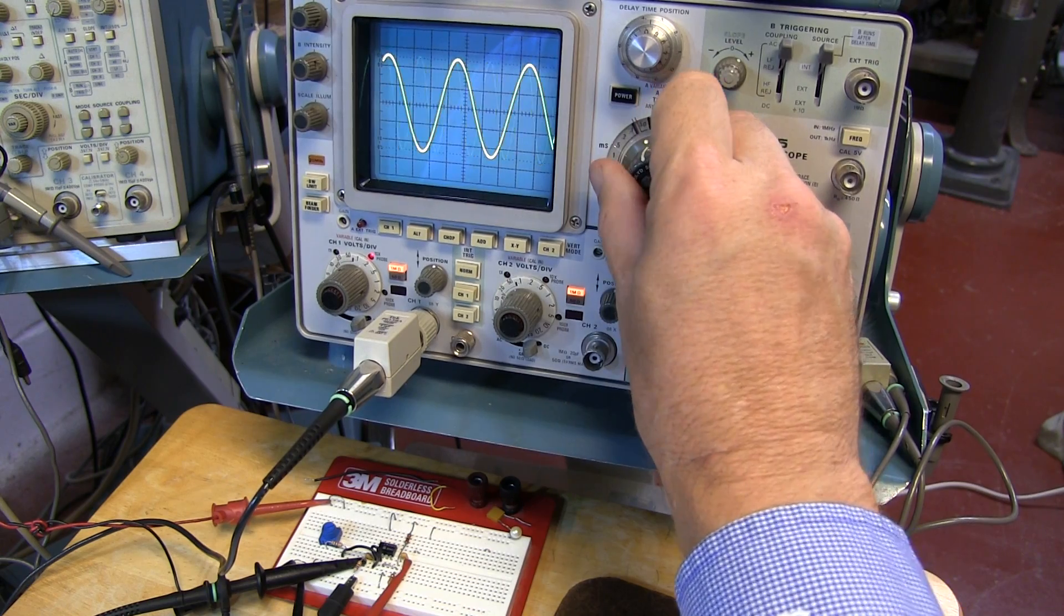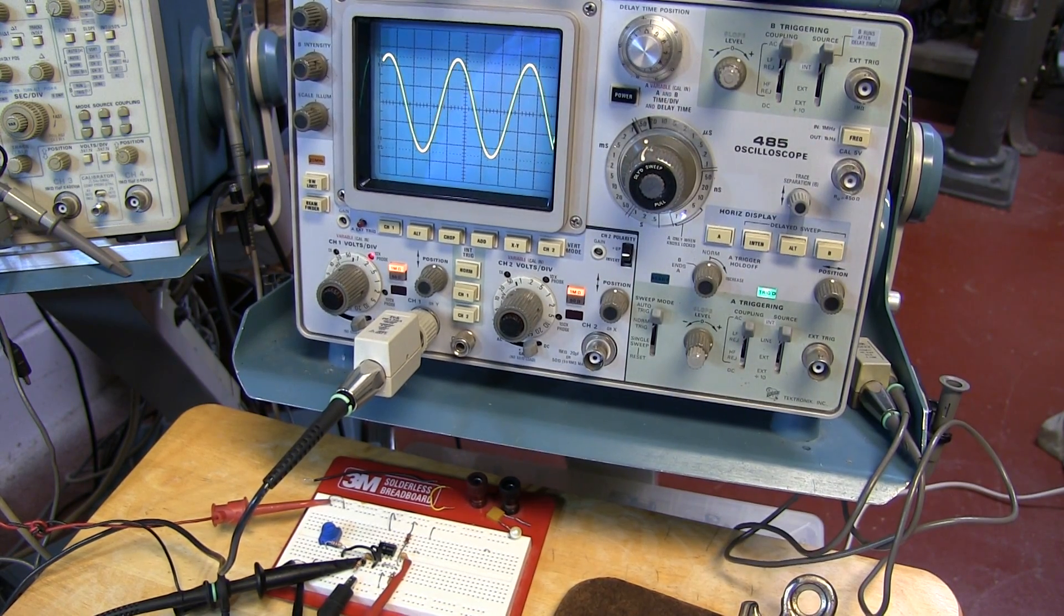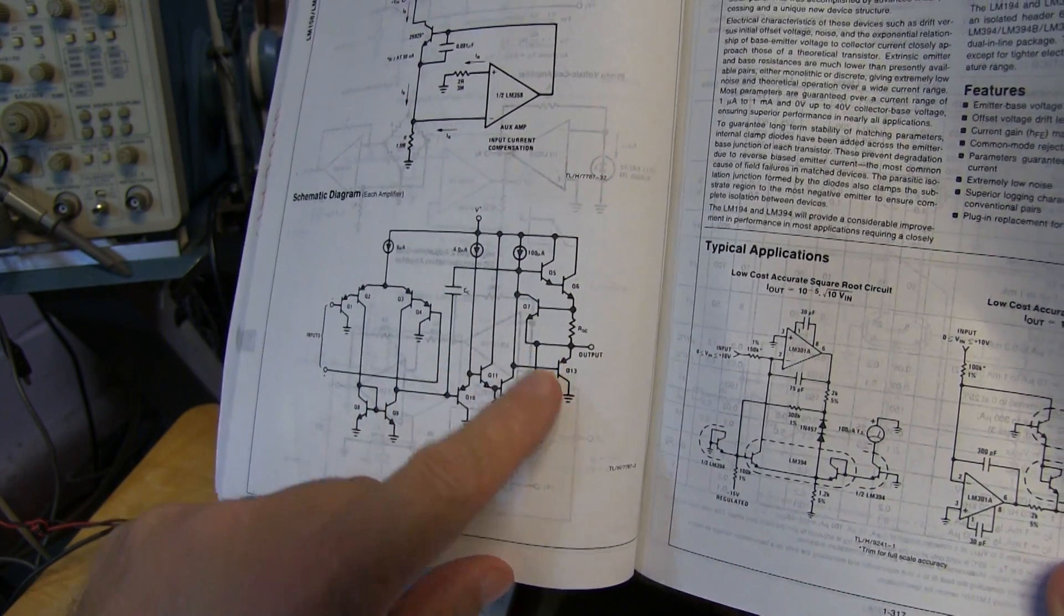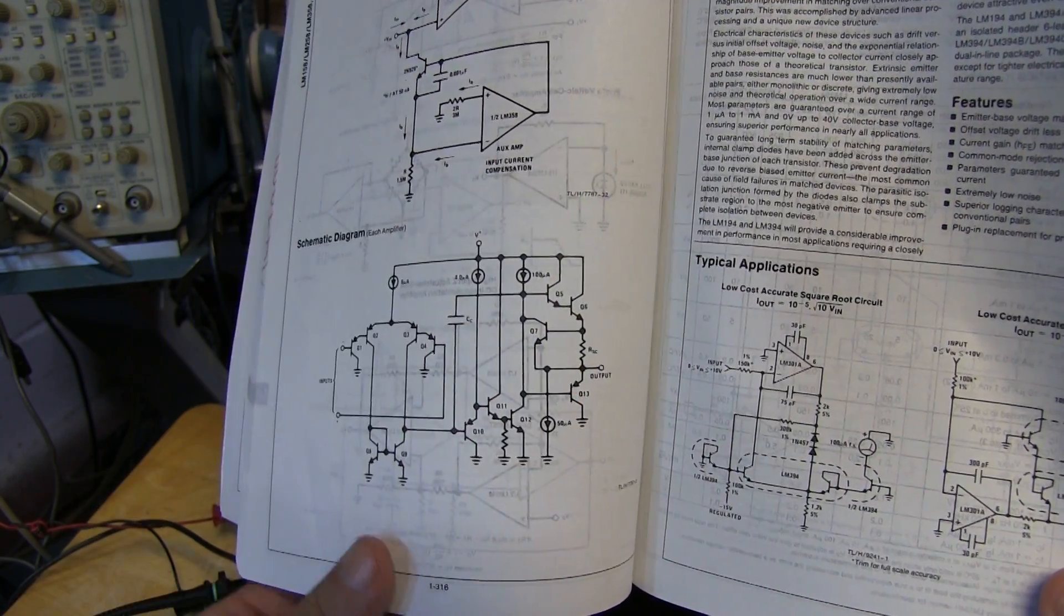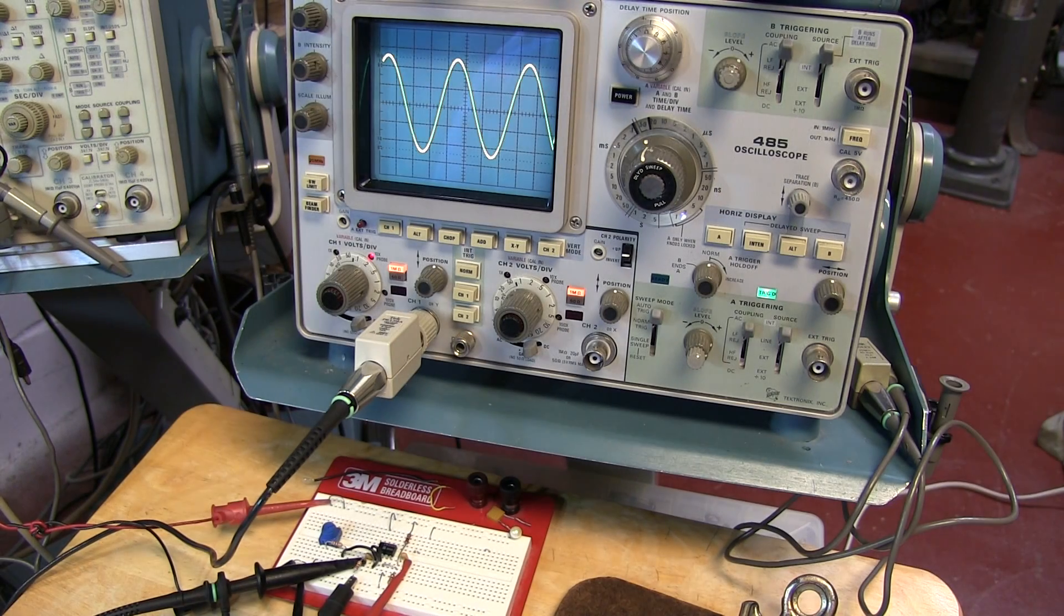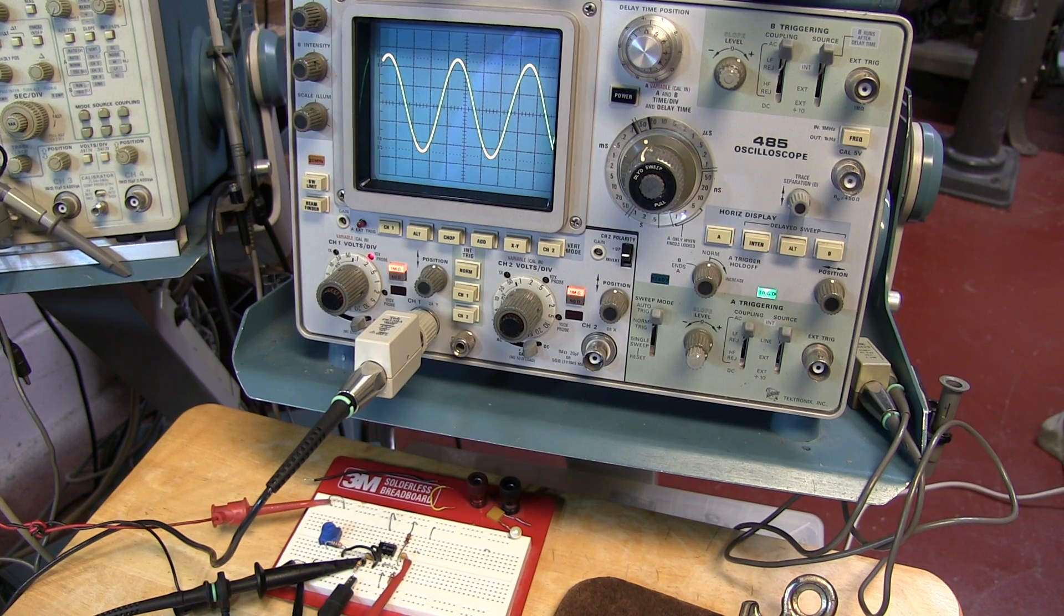So I hope you enjoyed this short video to discuss crossover distortion. Now you understand a little bit more about the root cause of it and how the output structure of the given op amp that you're using can result in some crossover distortion, and in this particular case, one way to alleviate that. Thanks again for watching. Comments are always welcome.